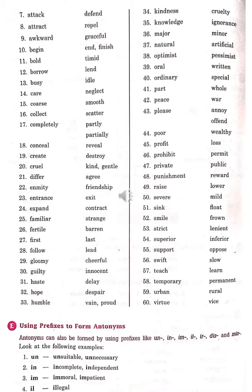Expand (Badhana) – Contract (Ulta Kerna). Familiar (Jankar) – Strange (Ajnabi). Fertile (Upjau) – Barren (Banjar). First (Pahla) – Last (Aakhri). Follow (Anusran Kerna) – Lead (Netritab Kerna).